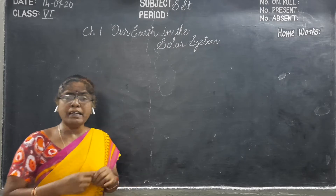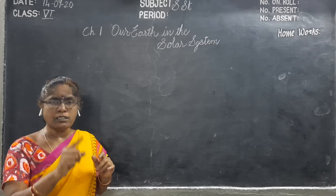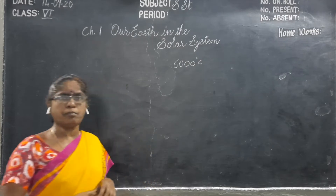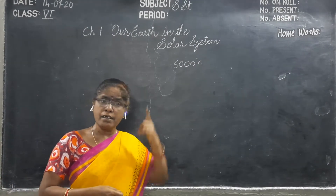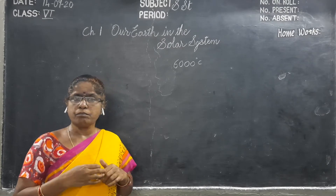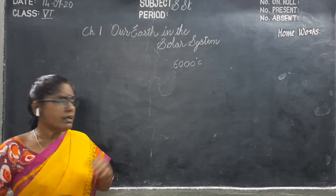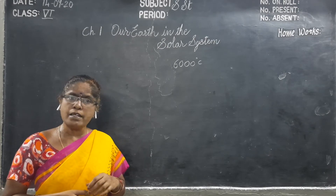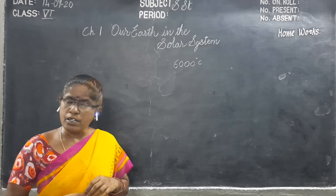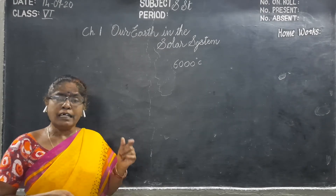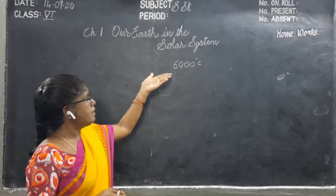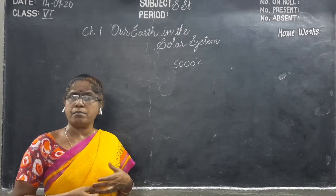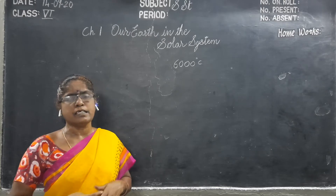The temperature of the sun at the periphery — the outer surrounding wings — is nearly 6000 degrees Celsius. And the distance from the sun to our Earth is 150 million kilometers. The sun is emitting that much temperature, but we are not getting that much because it is far away from us. That's why we are getting only up to 50 degrees Celsius.